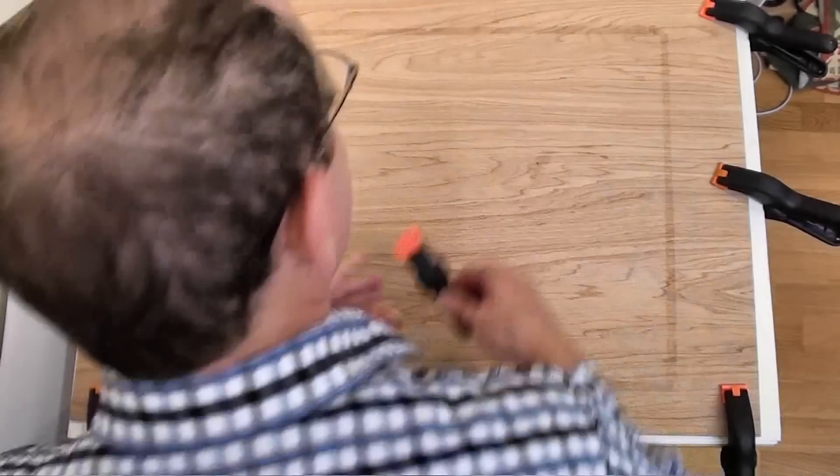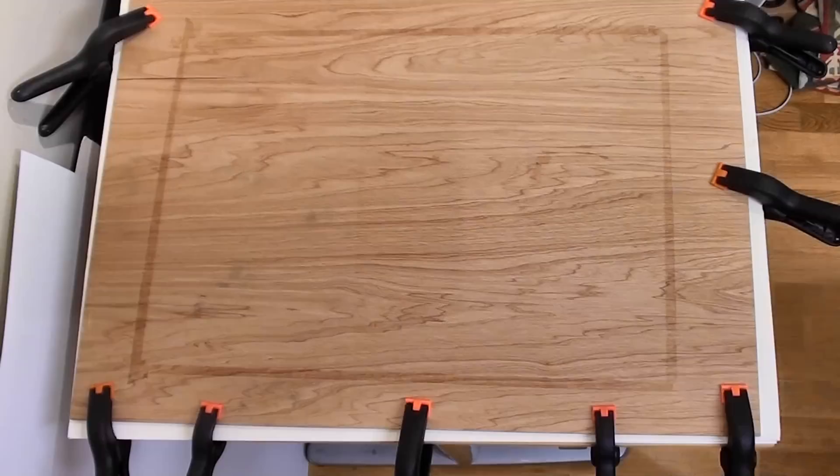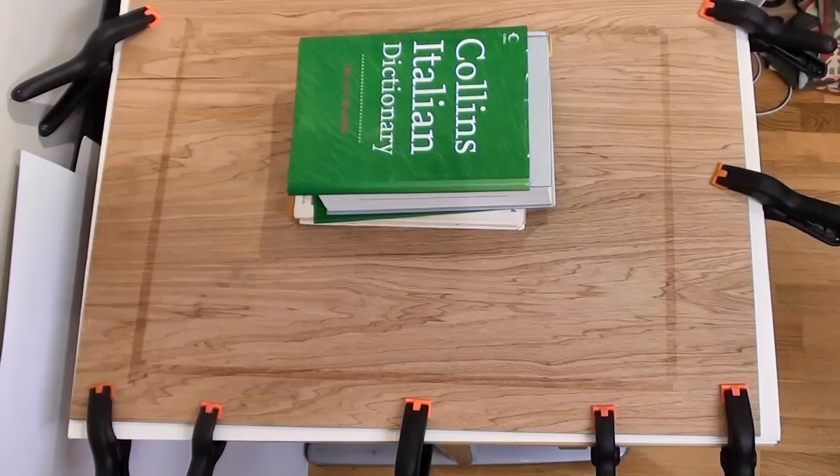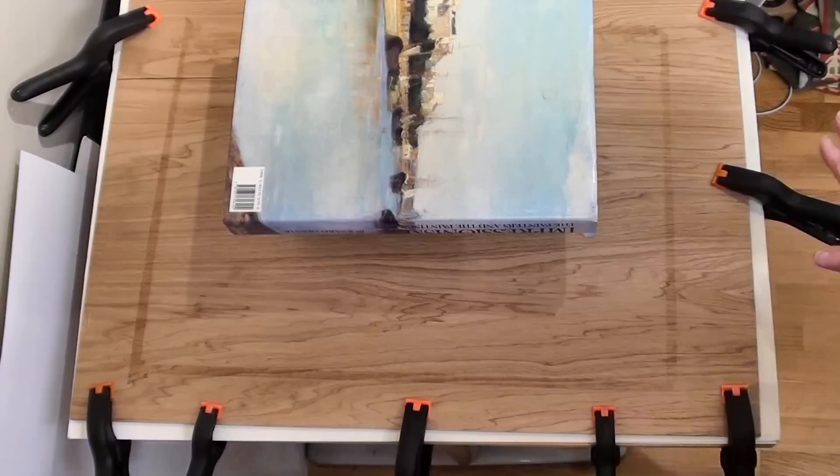There we go. And then sometimes what I place in the middle here is a collection of very heavy books. That just helps keep everything nice and flat. Then I will leave this overnight, and when I take the clamps off, the painting should be dead flat. But we'll have a look at that once they're dry.